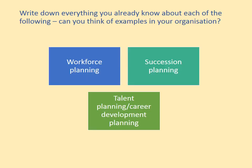Before we move on, write down everything you already know about each of the following. Start with workforce planning — write down what you know and try to think of examples from your organisation, including a definition. Then move on to succession planning, and finally to talent planning or career development planning as the CIPD call it. You covered talent planning with the first assessment criteria for assignment 3 RTO, so try to remember what you covered at level three. Pause the video, make some notes, and when you're ready continue.